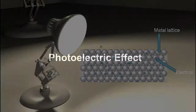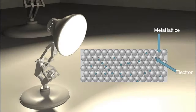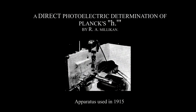The photoelectric effect is the ability of light to dislodge electrons from a metal surface. The effect was discovered in 1887, and the emitted electrons are called photoelectrons. In 1915, Robert Millikan developed an experiment to study this effect.